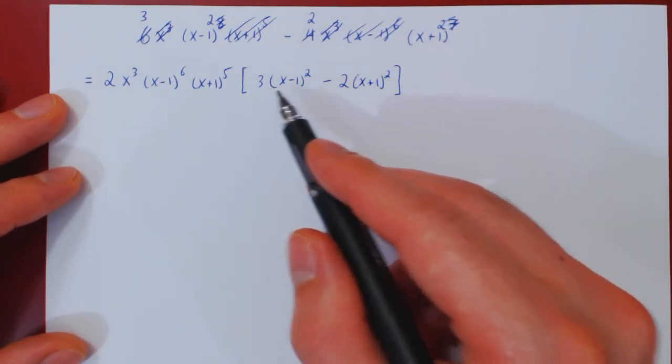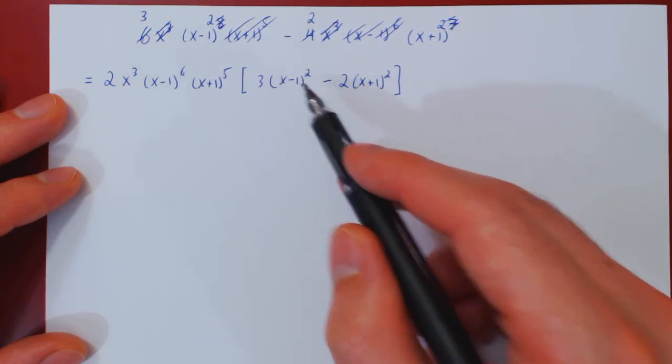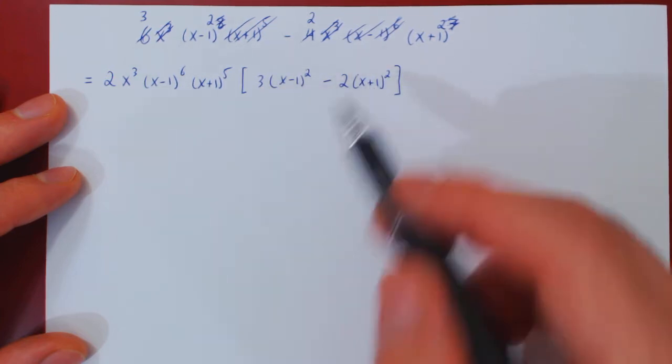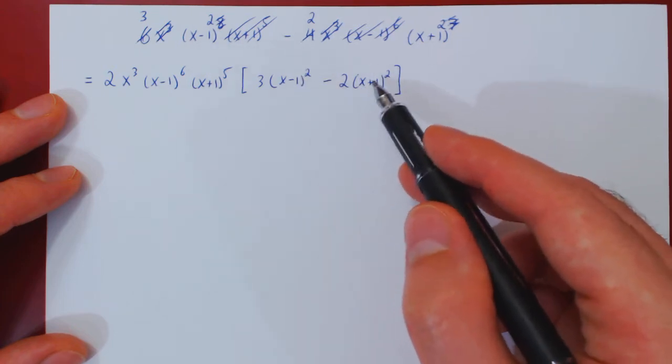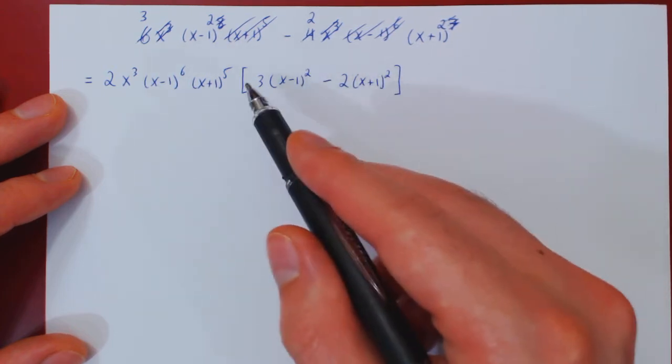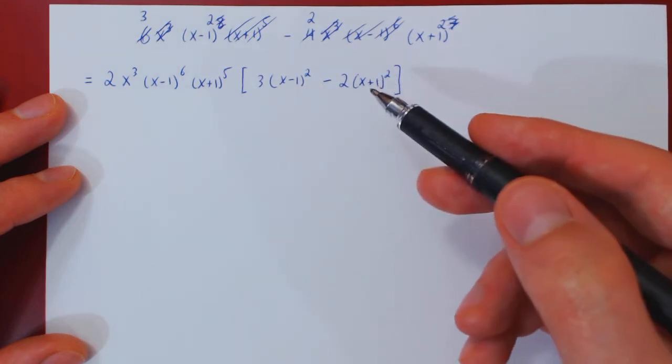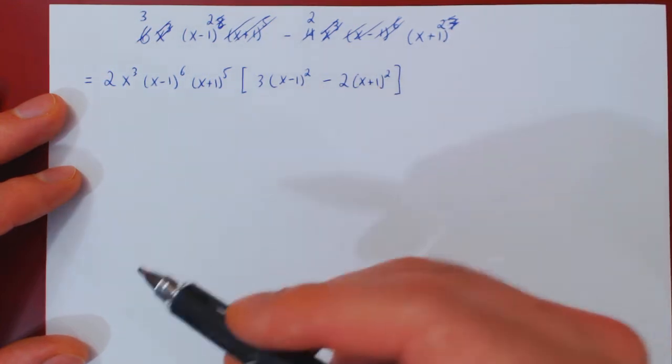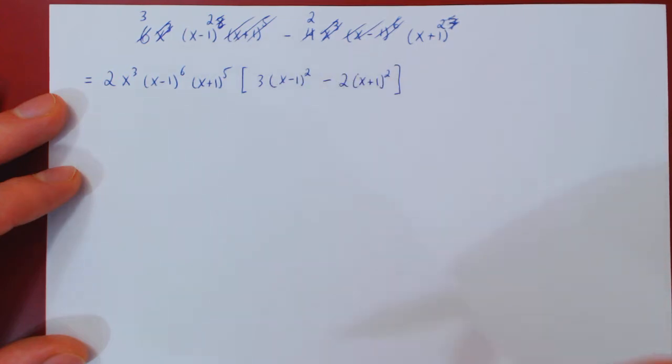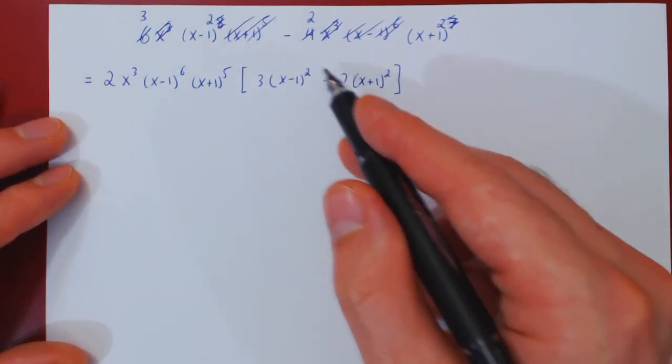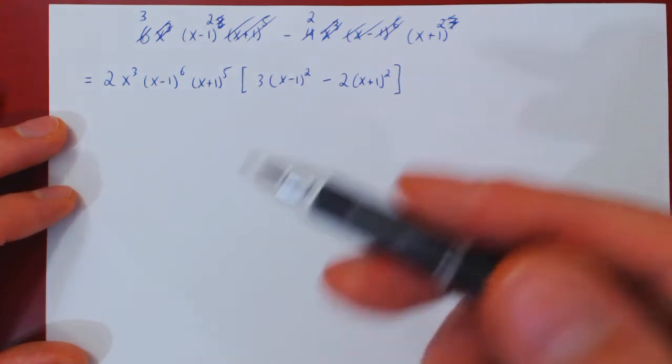Now the difference of two terms that remains, both terms no longer have any common factor. So what we can do is multiply and expand both the x minus 1 and the x plus 1 squared, regroup constant terms together, multiples of x and x squared, then we'll have a quadratic polynomial and hopefully we can factor this quadratic a little bit more.